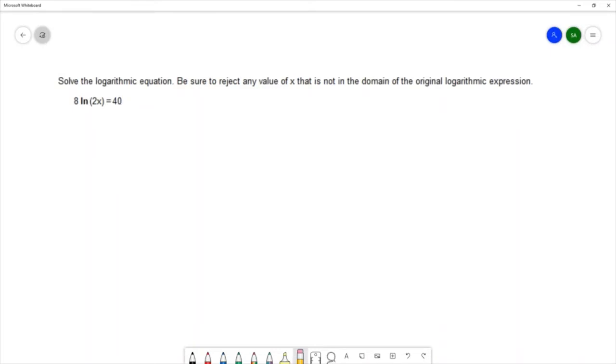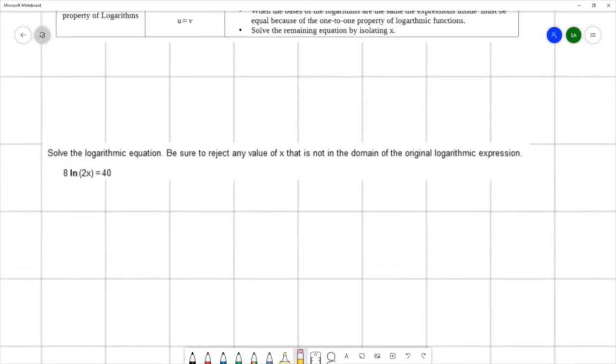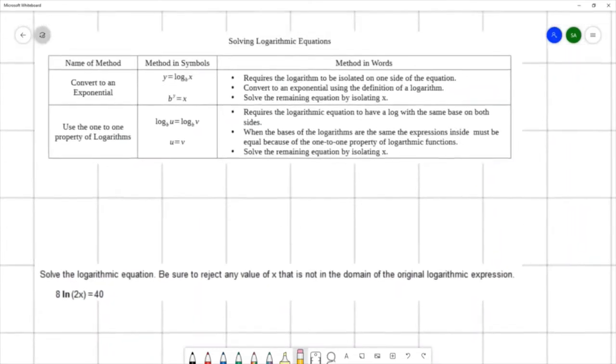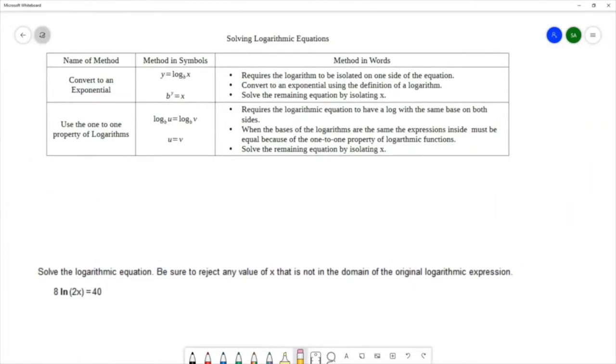Before we begin solving this equation, I want to explore the methods for solving logarithmic equations that we're familiar with. The two methods that we use are converting to an exponential equation and the 1 to 1 property of logarithms, and sometimes this is referred to as the property of equality. If we look at these two methods, let's take a look at the requirements. The first method requires the logarithm to be isolated on one side of the equation, as we have in the symbolic way right here, a log isolated on one side of the equation.